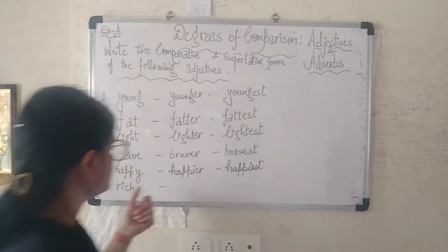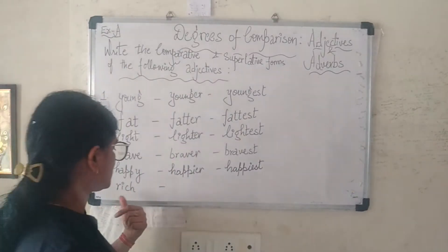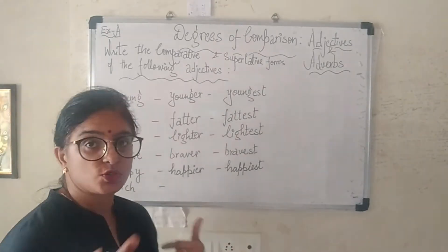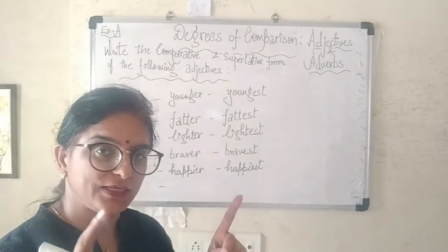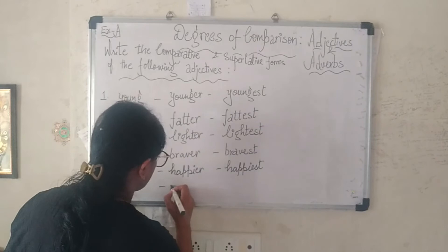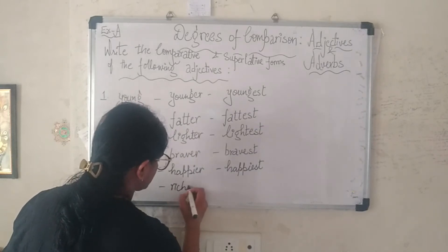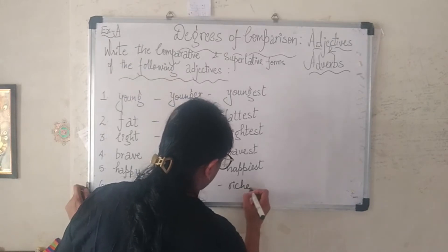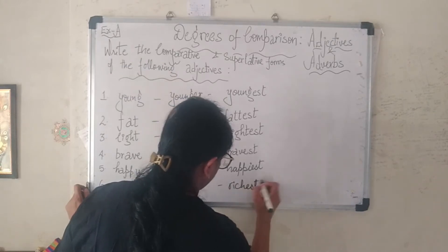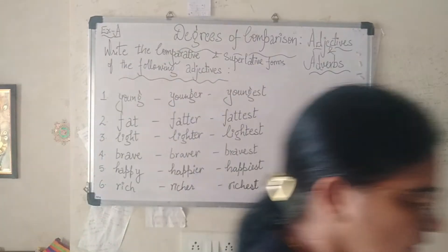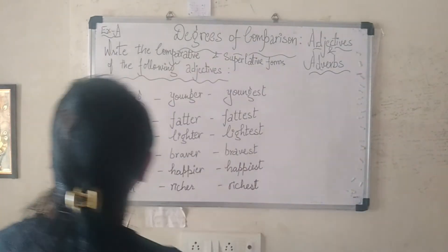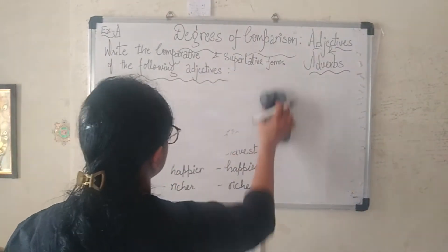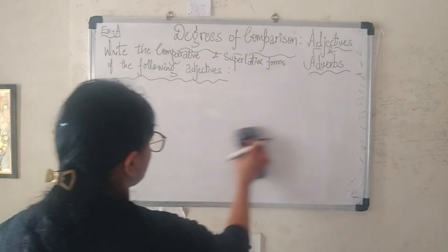Now we move on to the sixth adjective, which is 'rich'. The last letter is a consonant, so just add 'er' in the comparative form and 'est' in the superlative form — 'richer' and 'richest'. That covers adjectives one to six; we have written their comparative and superlative forms.